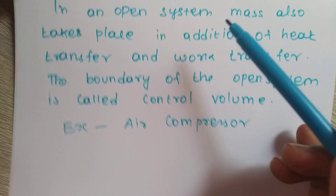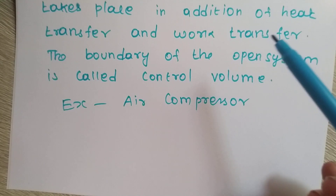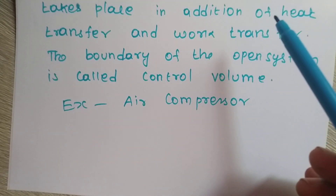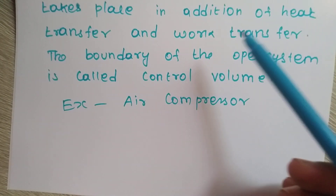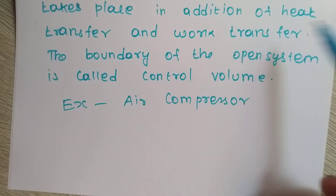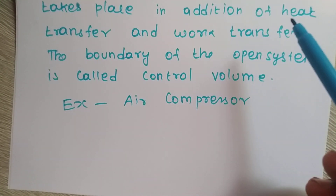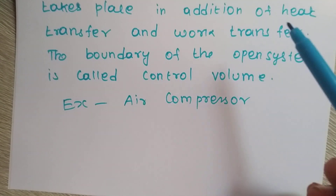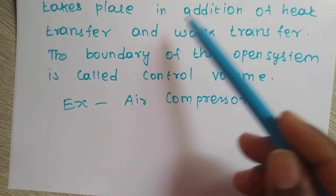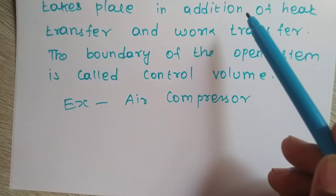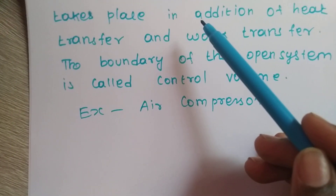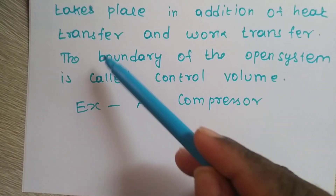For a two-wheeler engine, heat is transferred. If you look at the fuel, heat is transferred through combustion. The combustion products — the exhaust — are transferred out of the system. In an open system, mass transfer takes place in addition to heat transfer and work transfer.